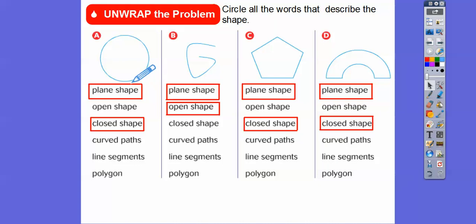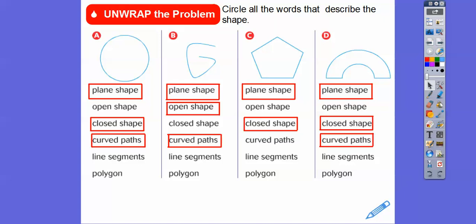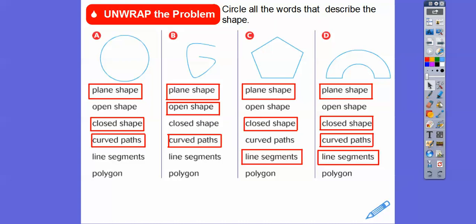The curved paths — this one has a curved path, this one has some curved paths, and so does this one. This one has some segments here and here. Segments are straight lines that have endpoints — that's a segment, that's a segment. This one's curved, this one's curved. Which ones have line segments? These are line segments — think of straight little pieces of lines. So these shapes have line segments. Now, the polygon — there's only one. It's this shape right here. A polygon is a closed figure with an inside and outside, made up of line segments.